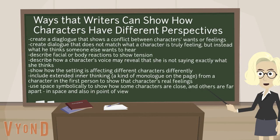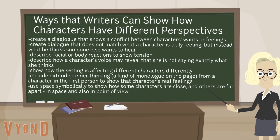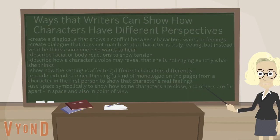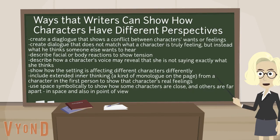Here are some writing moves you may have noticed that help us see different perspectives. Think through each one as I read them — you may have said a similar thing in a slightly different way. Ways that writers can show how characters have different perspectives: create dialogue that shows a conflict between characters' wants or feelings; create dialogue that does not match what a character is truly feeling, but instead what he thinks someone else wants to hear.